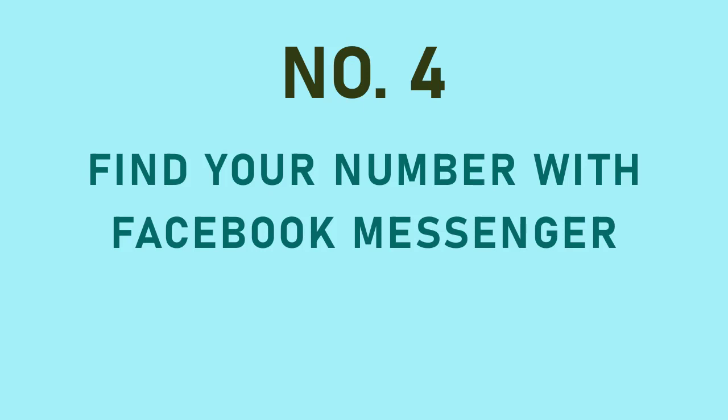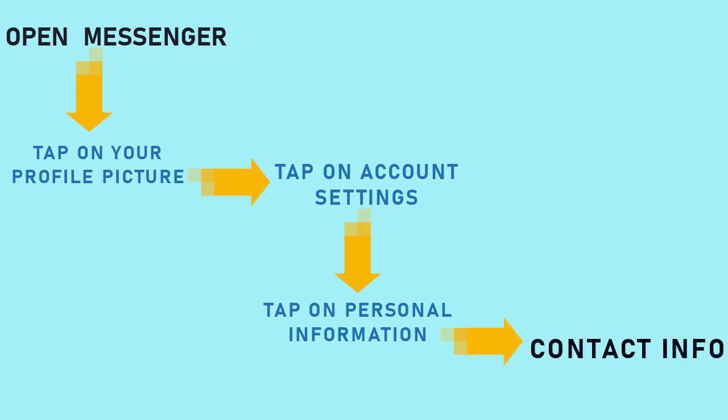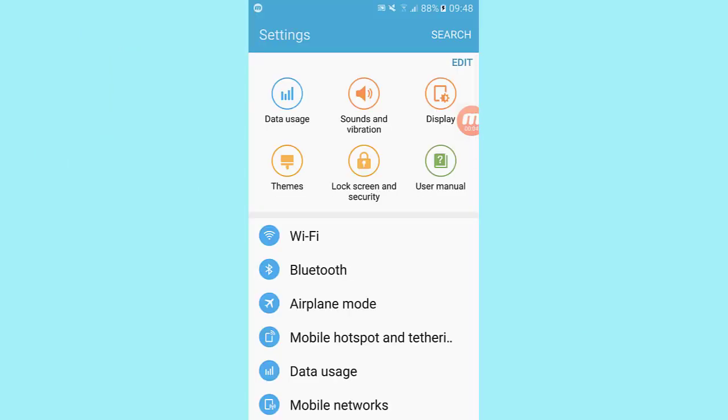Number four: find your own phone number with Facebook Messenger. This method only works if your Facebook account is registered with your phone number or you saved a phone number in your contact info. If you used your phone number to log into Messenger, go to Facebook Messenger, tap on your profile picture, scroll down and tap on Account Settings, then tap on Personal Information and check the Contact Info section. Hopefully you'll find your phone number there.